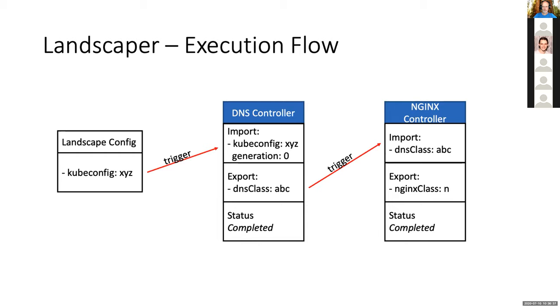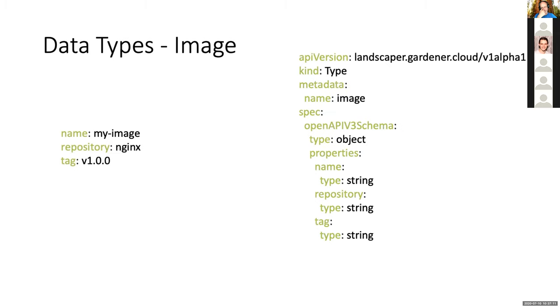Now I want to go into detail on what the actual definitions look like in YAML — the CRDs. Starting with the easiest: the data type. We want it as OpenAPI 3 spec. For example, to describe an image consisting of a name, a repository, and a tag, it would be an object type with properties name, repository, and tag, all of type string. With that you can describe all complex data types required, and you always know you get what you requested.